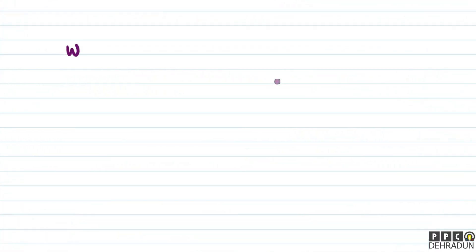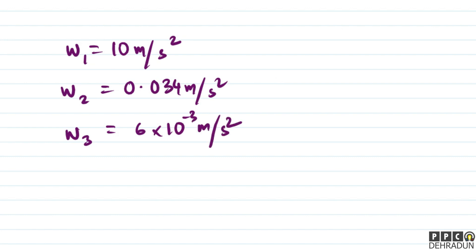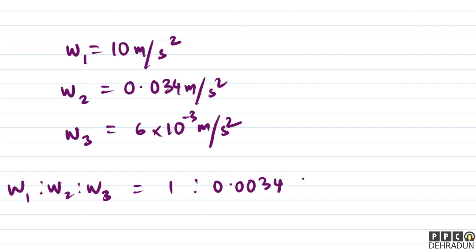So summarizing: W1 ≈ 10 m/s², W2 ≈ 0.034 m/s², and W3 ≈ 6 × 10⁻³ m/s². To find the ratio W1 : W2 : W3, we divide everything by 10, giving us 1 : 0.0034 : 0.0006. This is our final answer.